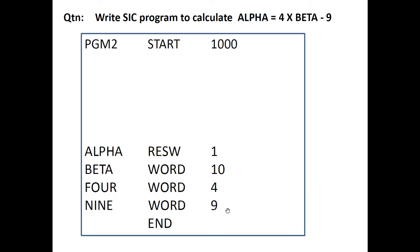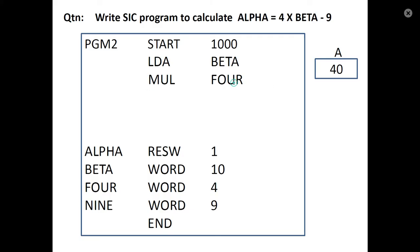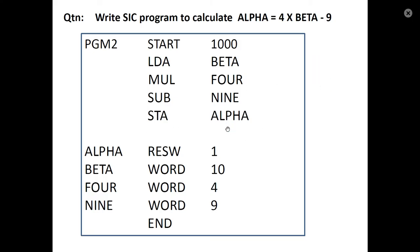Program instructions: LDA beta — accumulator equals beta value 10. MUL FOUR — FOUR has value 4, accumulator previous content is 10, and 10 into 4 is 40 stored in accumulator. Then SUB NIN — 40 minus 9 is 31 in the accumulator.